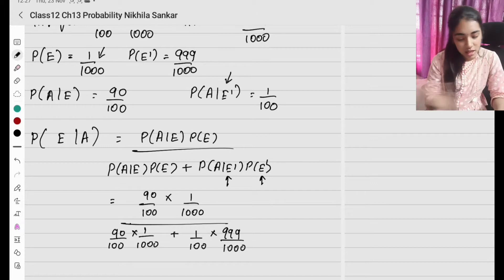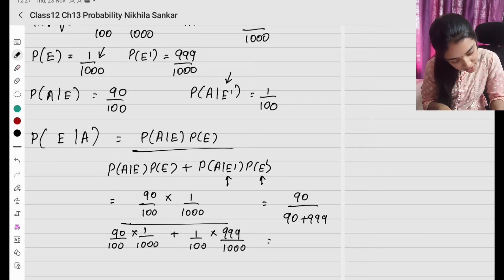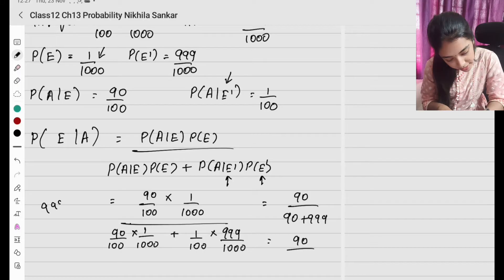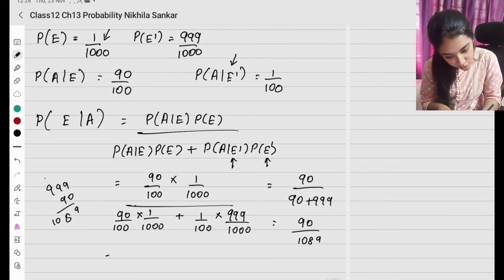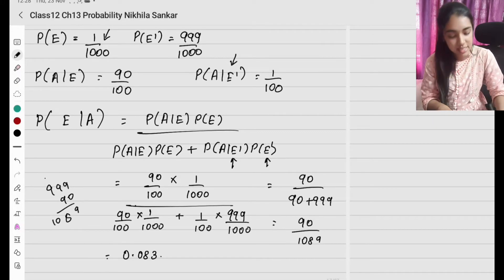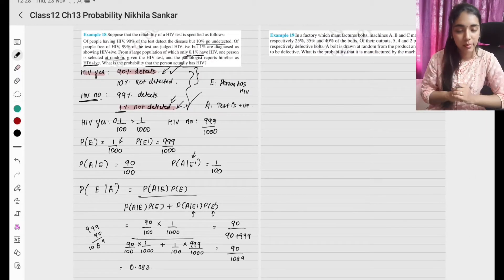All the denominator terms have a common factor of 1000, so they cancel. We are left with 90 divided by 90 plus 999, which gives 90 divided by 1089. Solving approximately, the answer is 0.083. The answer is given in the textbook; you can also verify using a calculator.